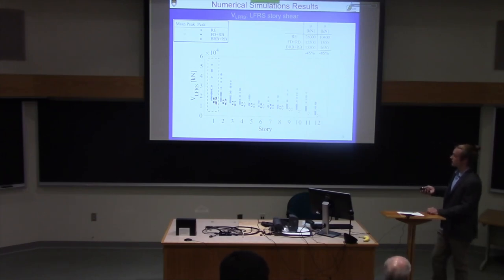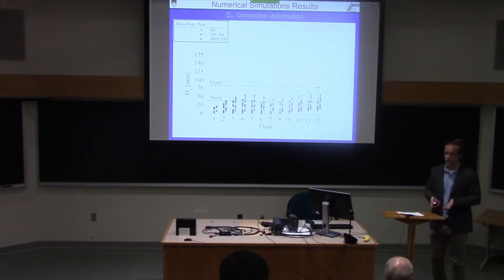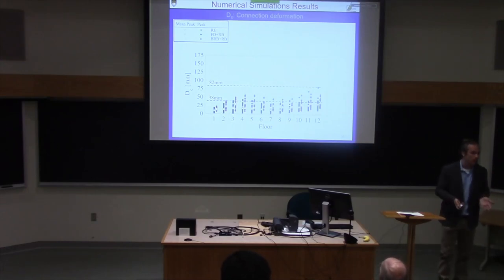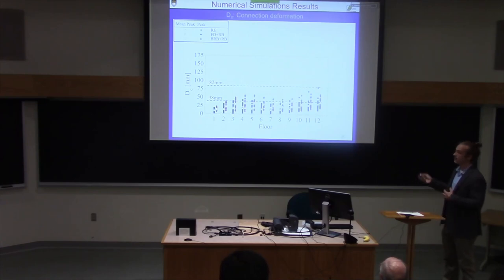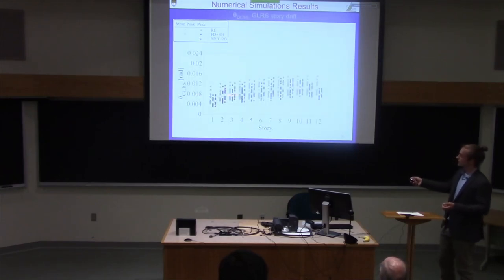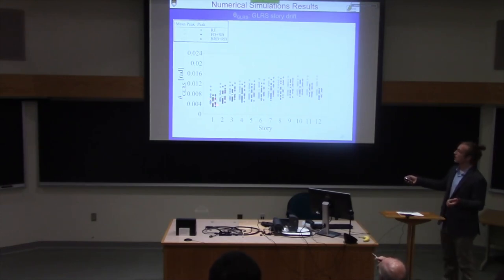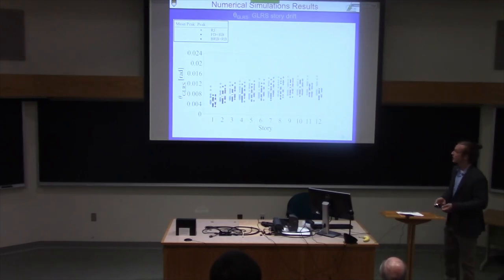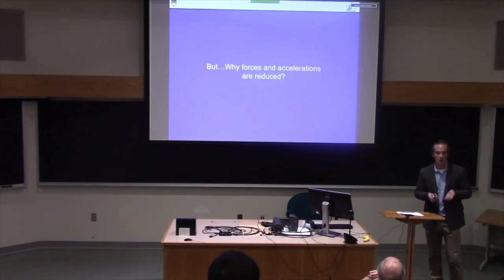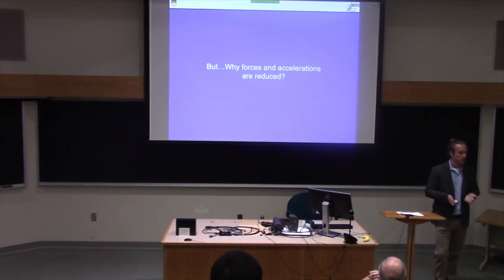The trade-off is that we allow some deformation to occur at each floor level. For this design, connection deformation is not excessive, and the drift observed is also not excessive — buildings with deformable connections show similar drift to those with rigid elastic connections, so no additional demand is introduced in the gravity system. An open question remains: why are these reductions happening, and what is the underlying mechanism?